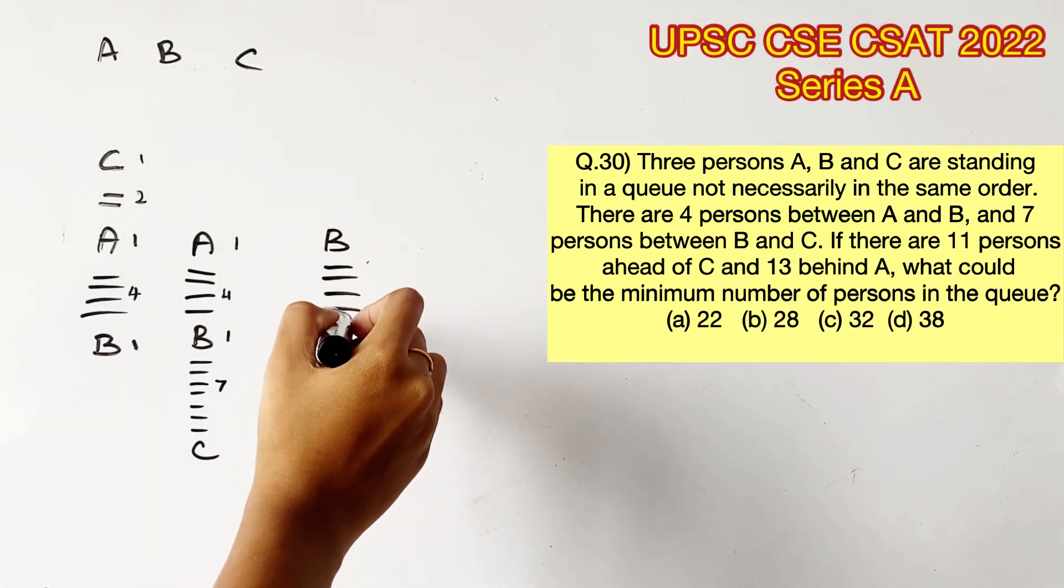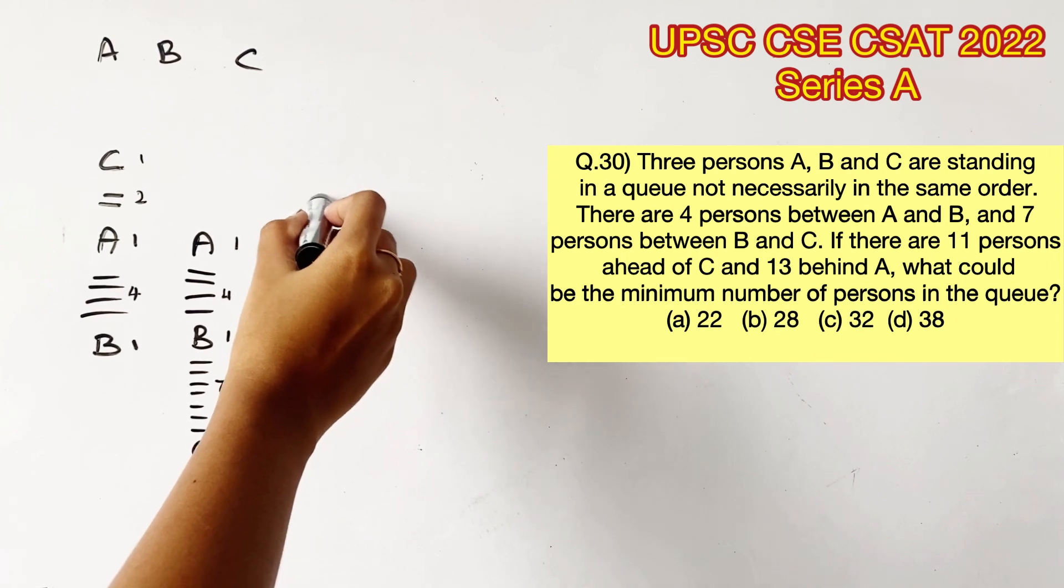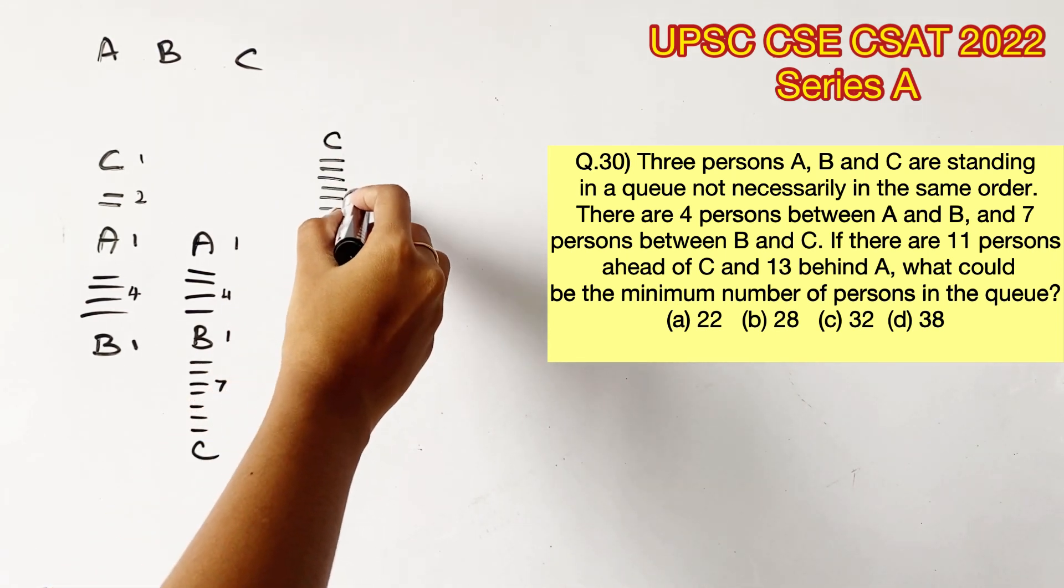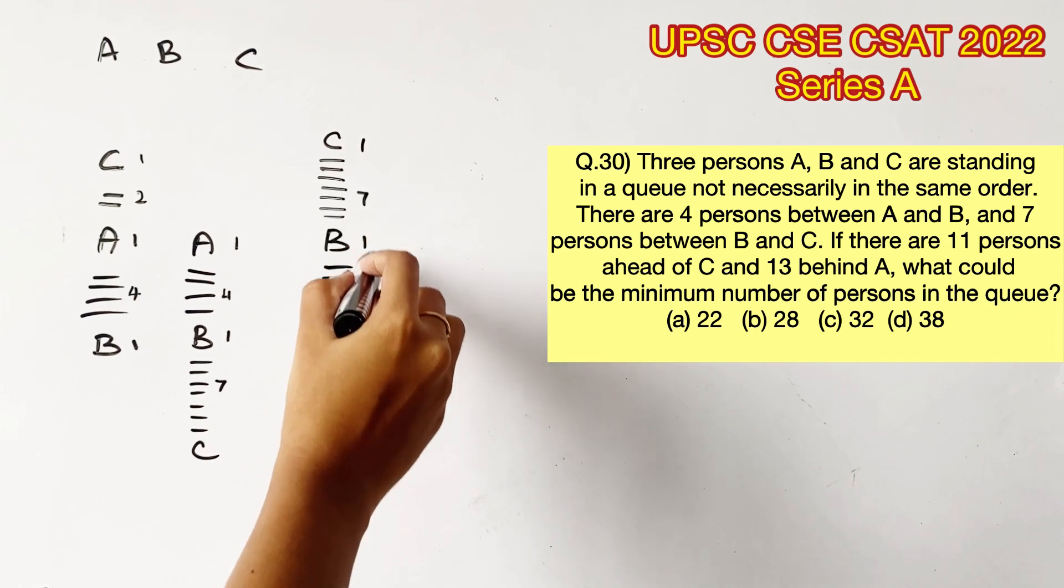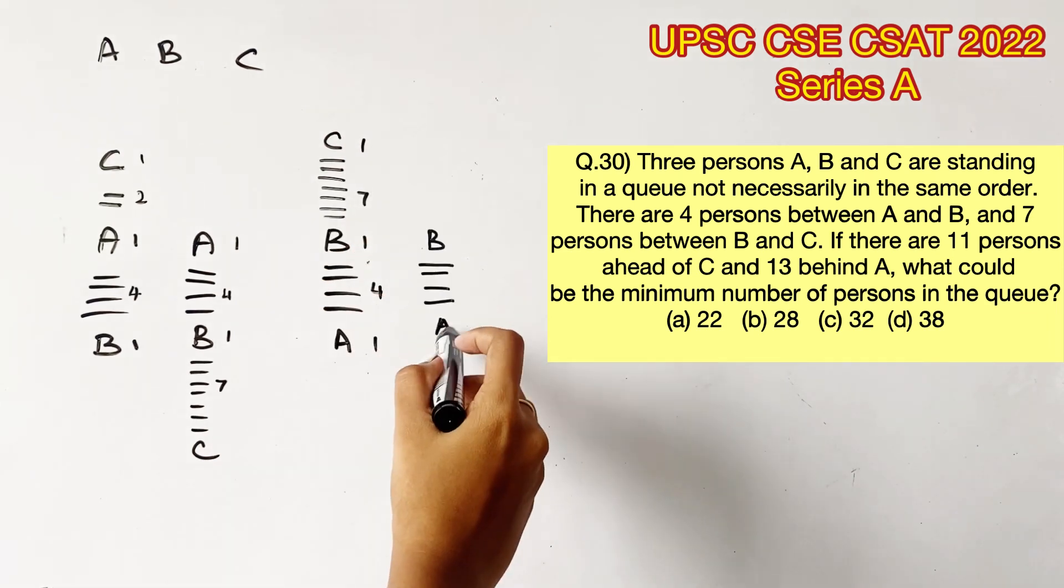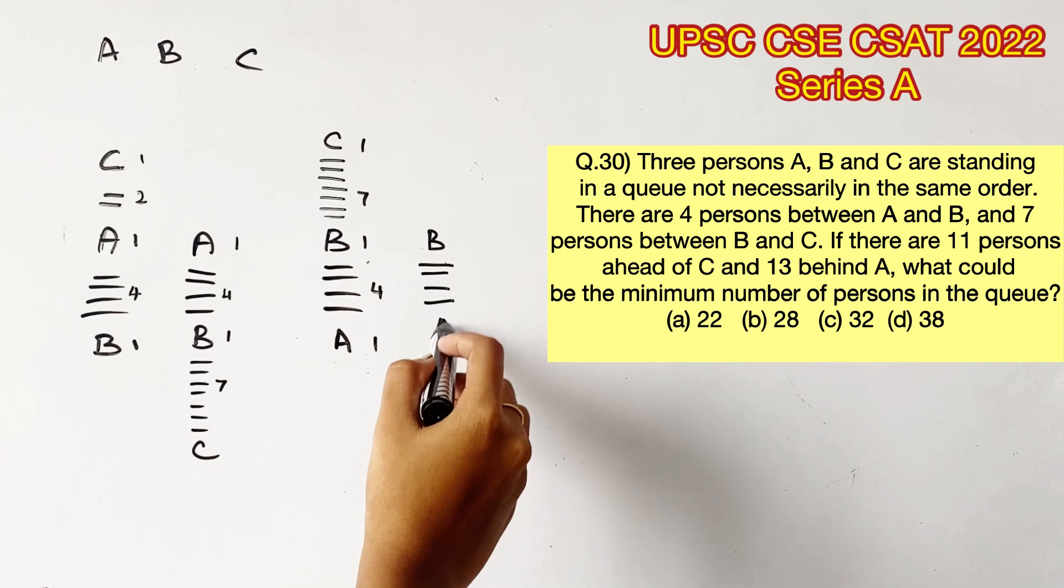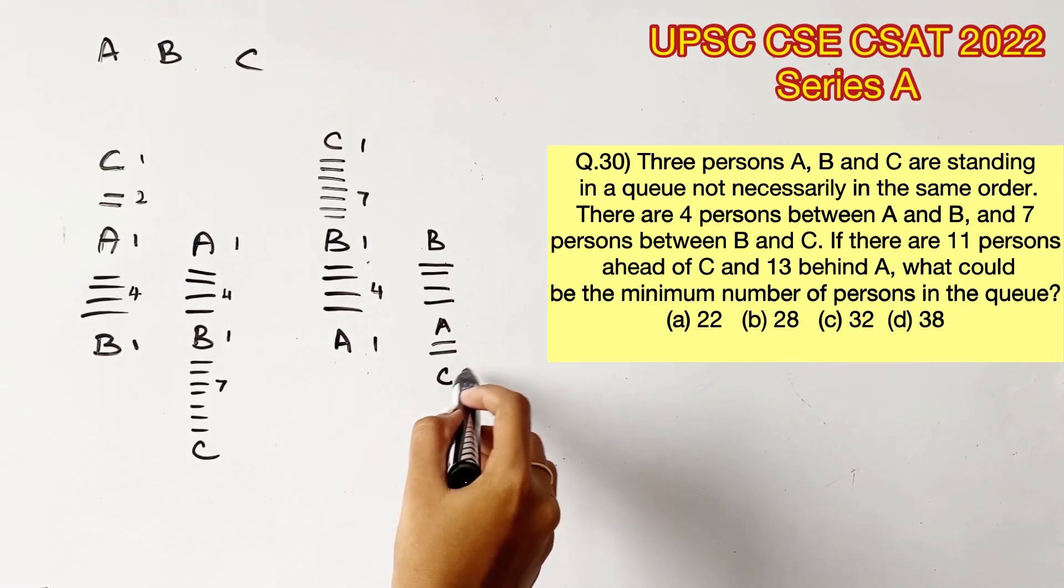So we have to fill this possibility as well where there are 7 people between C. First I am putting C ahead of B. Then I am putting the same possibility where C is behind B. So this will become 1, 2, 3, 4, 5, 6, 7 and C here.